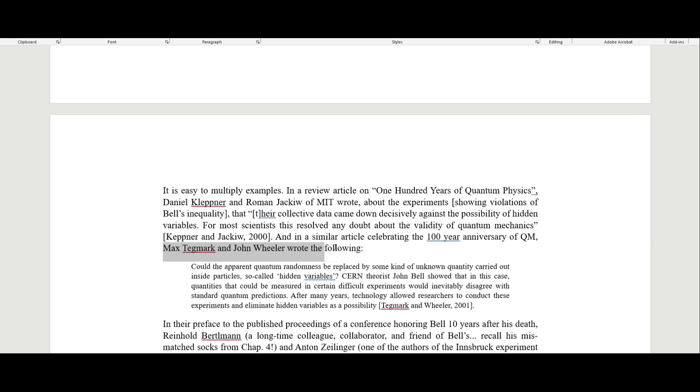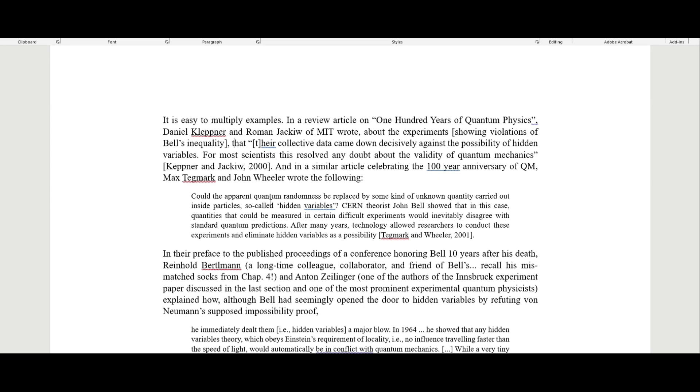In a similar article celebrating the 100-year anniversary of quantum mechanics, Max Tegmark and John Wheeler wrote: Could the apparent quantum randomness be replaced by some kind of unknown quantity carried out inside particles, so-called hidden variables? CERN theorist John Bell showed that in this case, quantities that could be measured in certain difficult experiments would inevitably disagree with standard quantum mechanics. After many years, technology allowed researchers to conduct these experiments and eliminate hidden variables as a possibility.